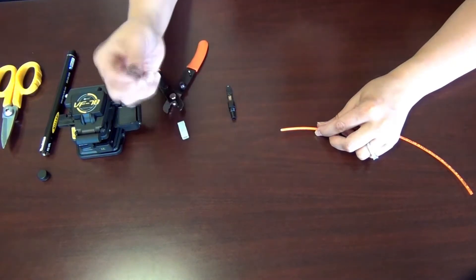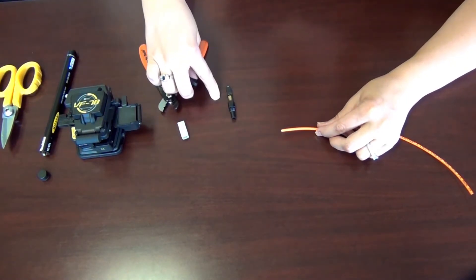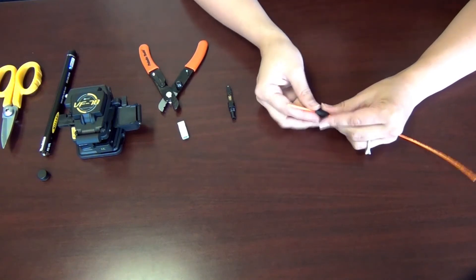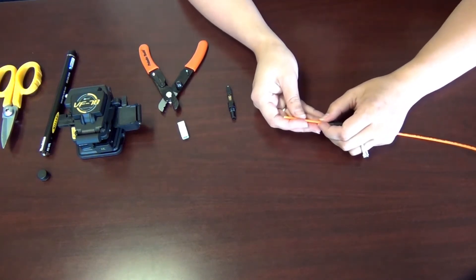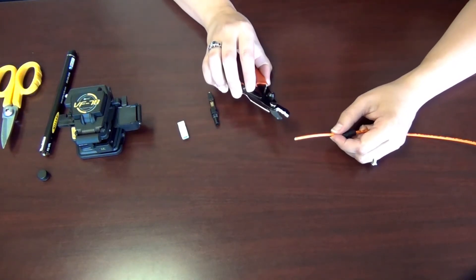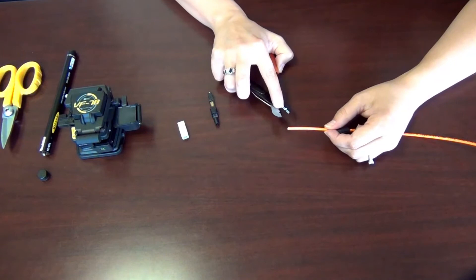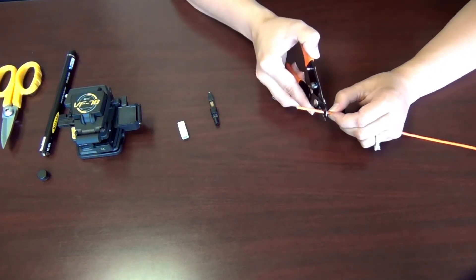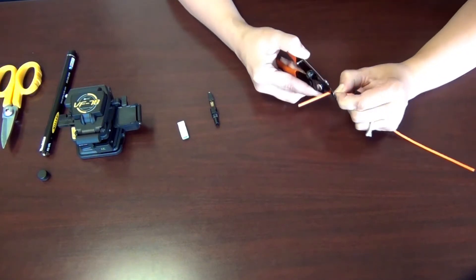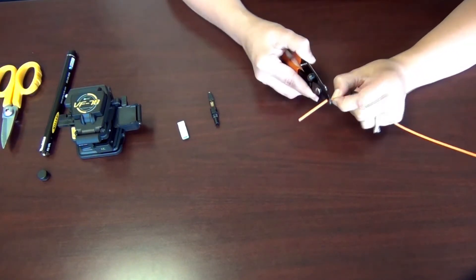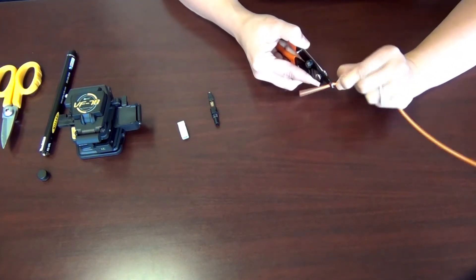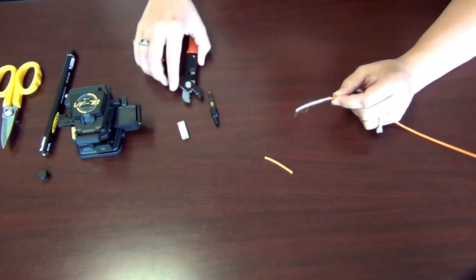The first thing you want to do is take the boot and unscrew it from the back of the SC connector. You're going to take it and put it right here on the fiber optic cable. Then you're going to take the strippers that came with the termination kit that I showed you earlier and use the largest setting on them and strip off the outer orange jacket. You don't want to strip off more than about two inches here because it won't fit in the connector bracket.